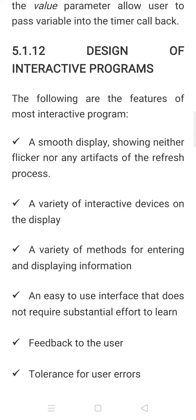Let's continue our discussion on input and interaction. The next topic is features of the interactive program. This is the continuation from the last session where we were discussing the design of building interactive models using the rotating square example. We are now going to discuss the features of a good interactive model. The first requirement is it should have a smooth display showing neither flicker nor any artifacts of the refresh process.